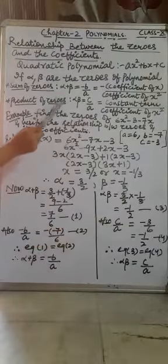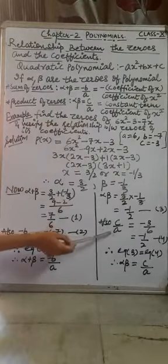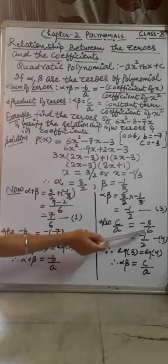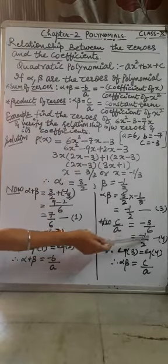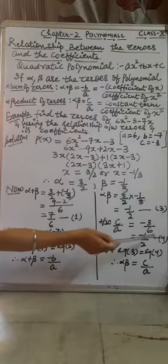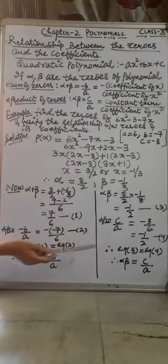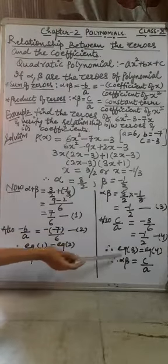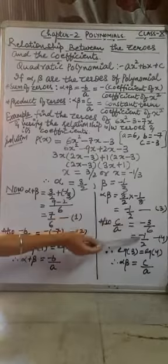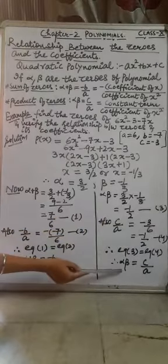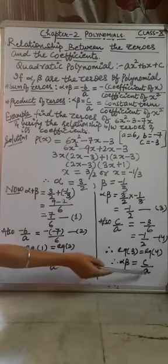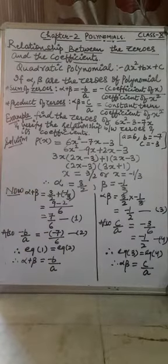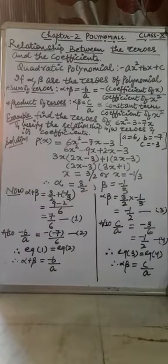This should equal c upon a. The value of c upon a is minus 3 upon 6, which reduces to minus 1 upon 2. Comparing equations 3 and 4, we can see they are equal. Therefore alpha into beta equals c upon a. Hope this relationship is very much clear to you. Thank you.